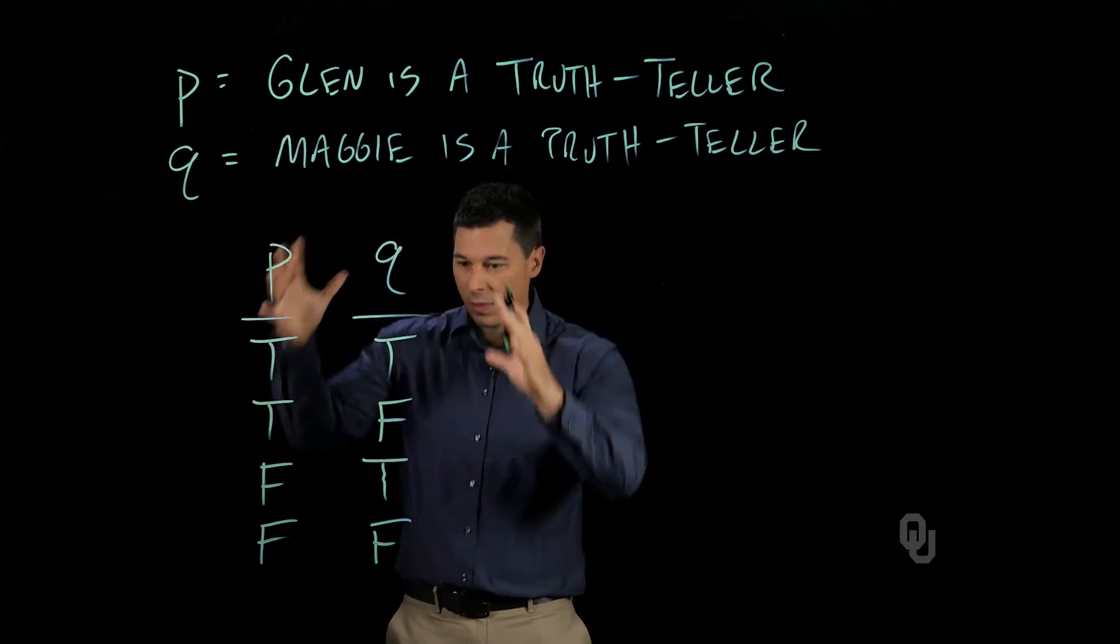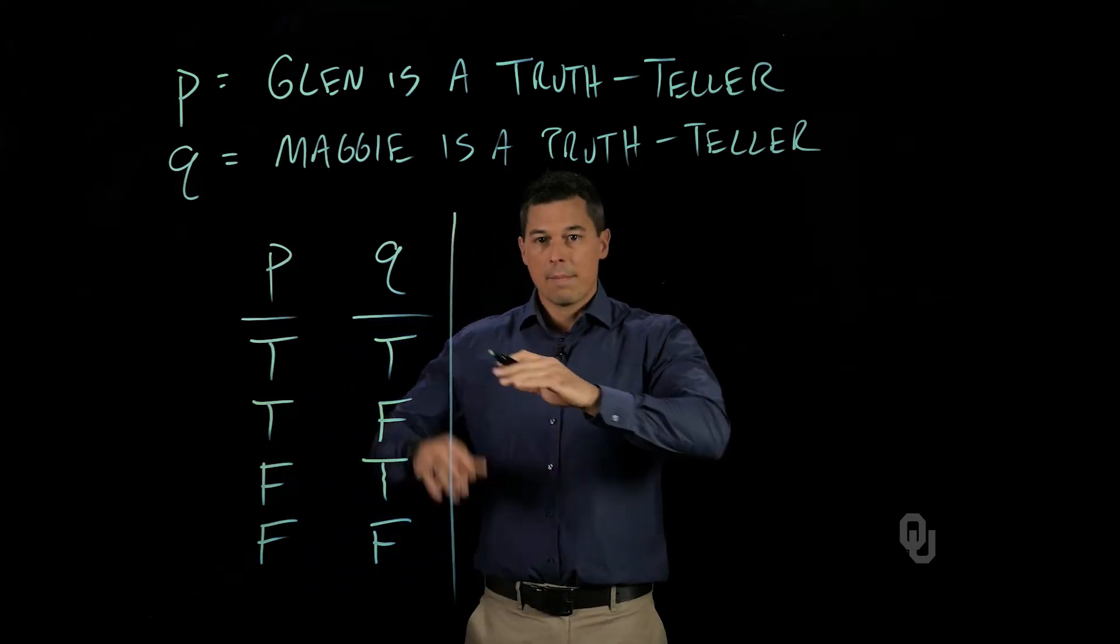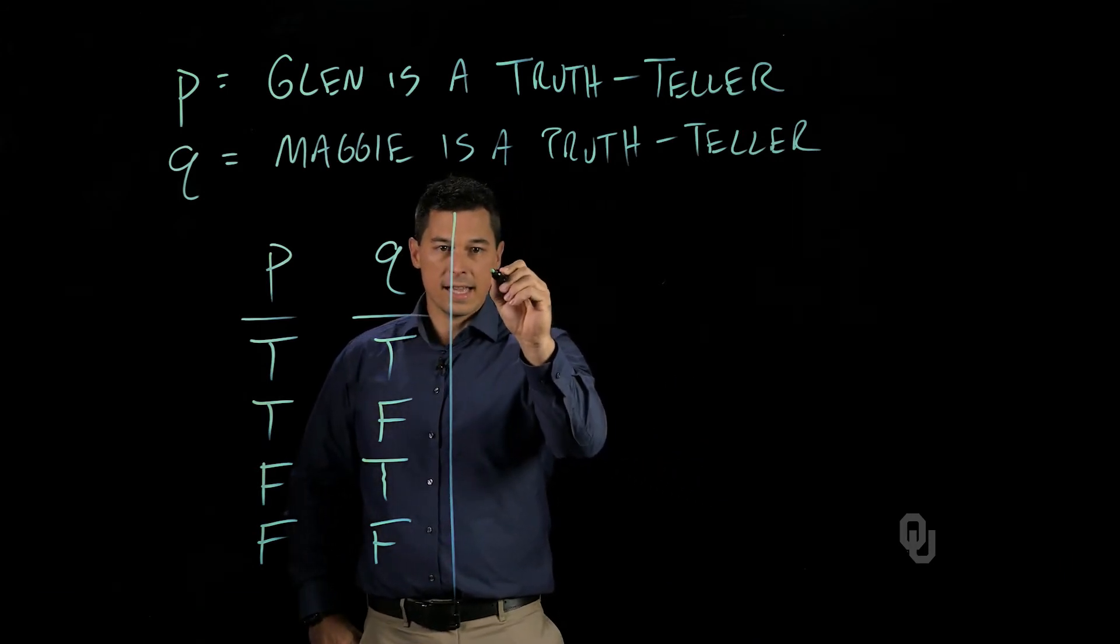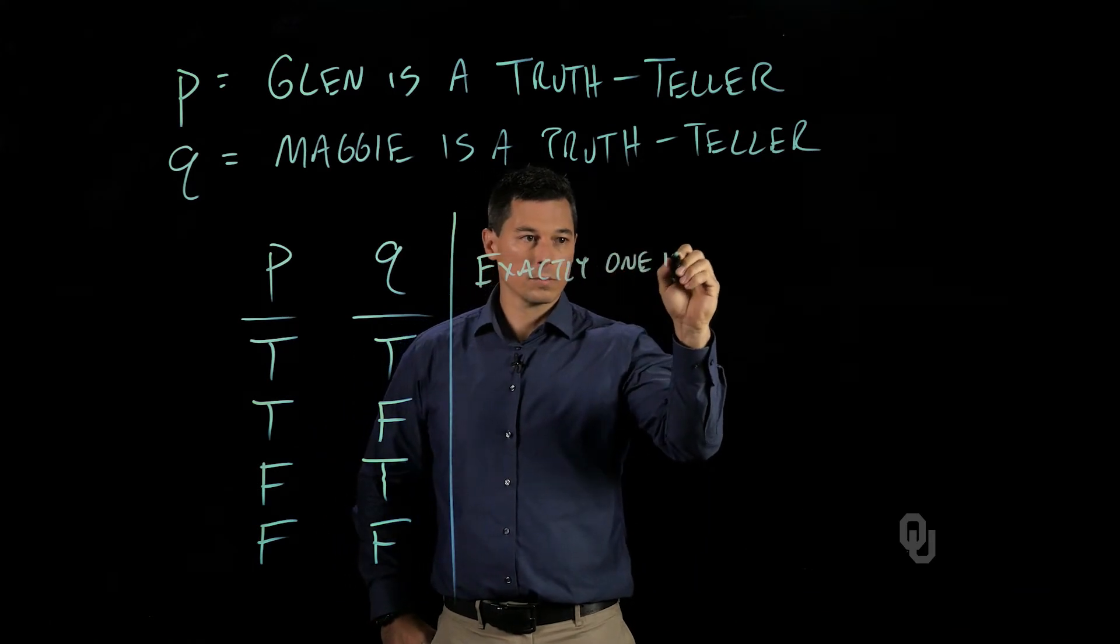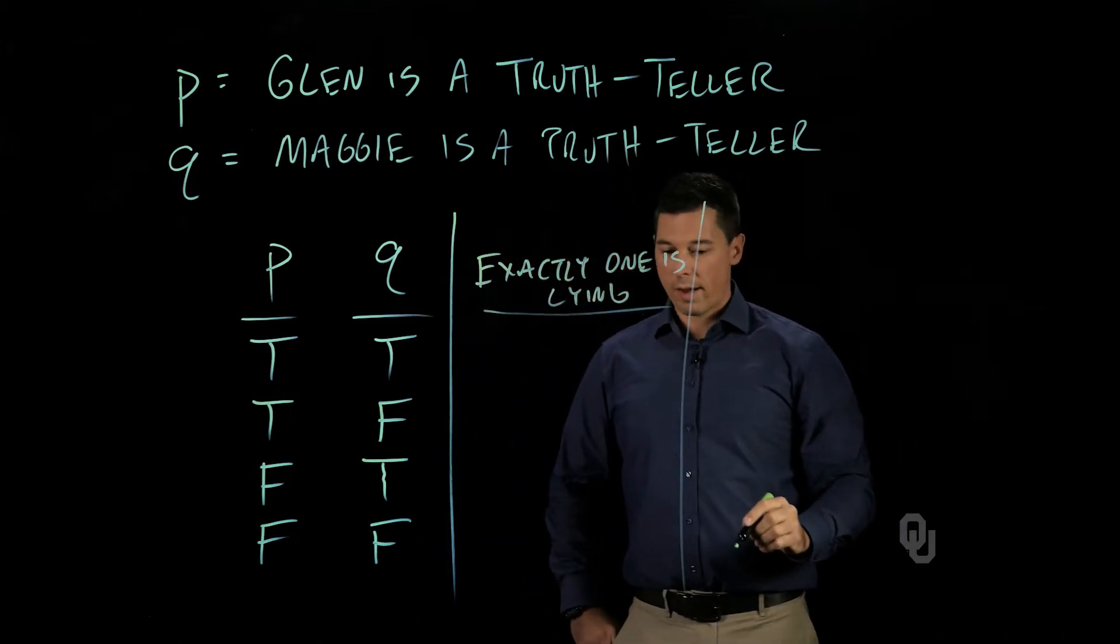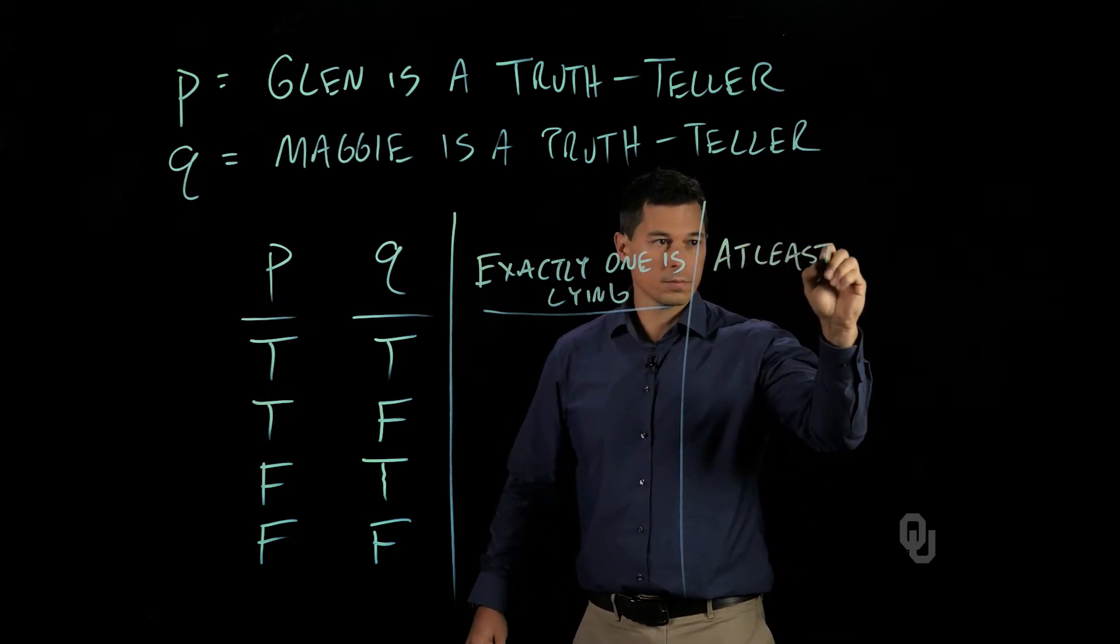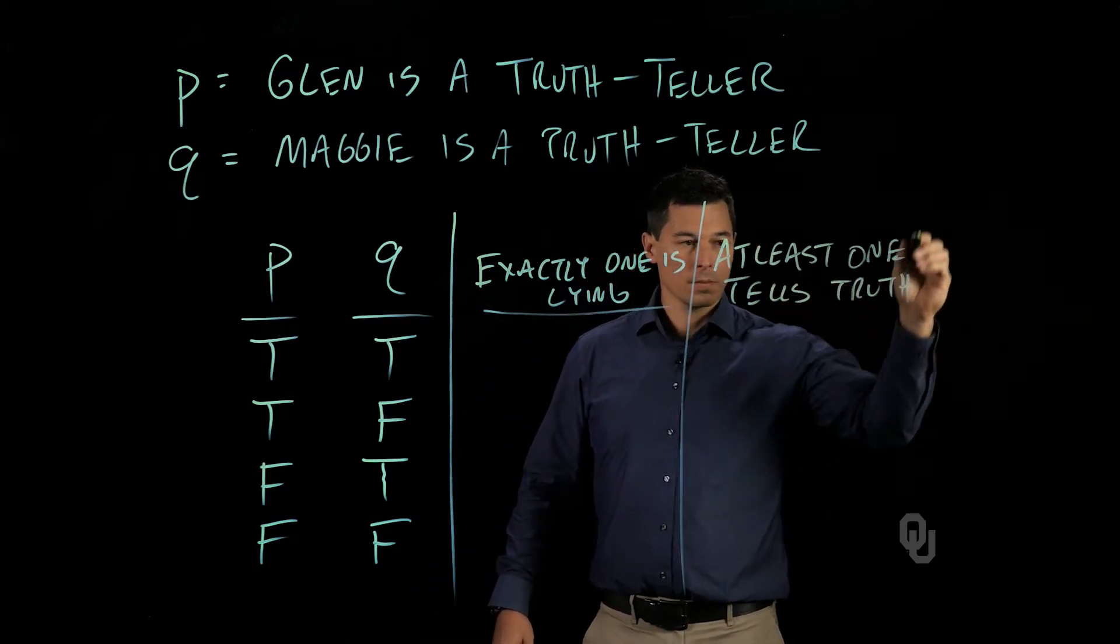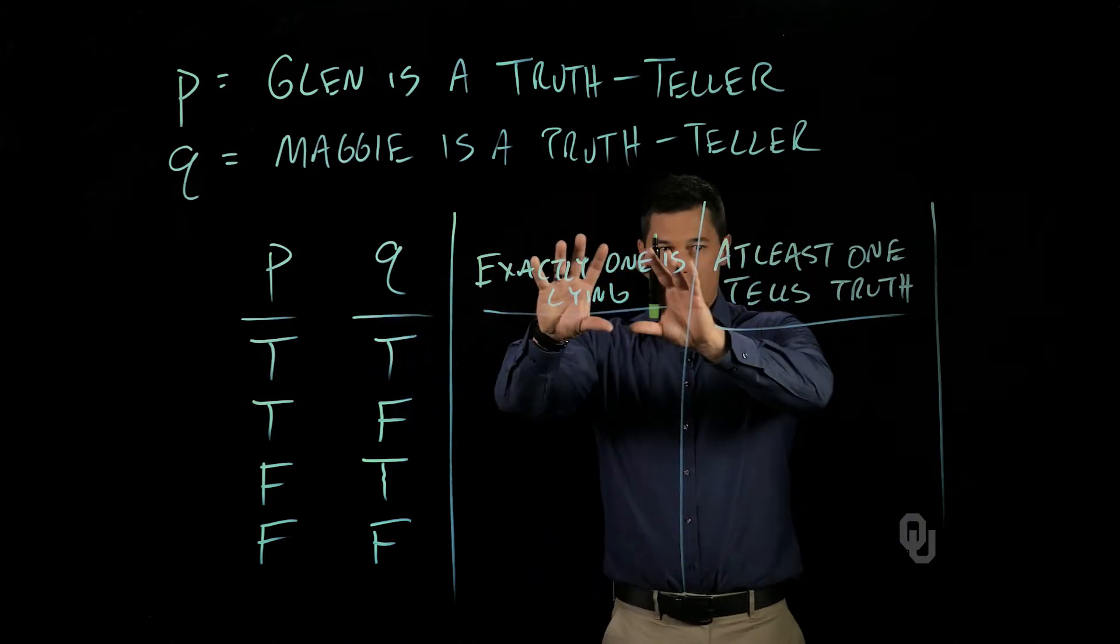So what I want to do is, once we think about the exhaustive solutions that exist in the problem, then we can now start analyzing this by breaking the problem up into its pieces. Statement one, made by Glenn, was that exactly one of us is lying. And then statement number two, made by Maggie, is that at least one of us is truthful. So in this case, now we have all the world possibilities that exist, and then we have these two statements.